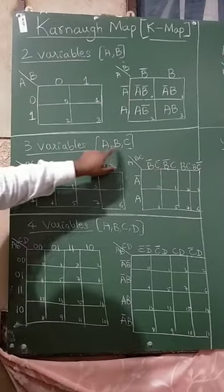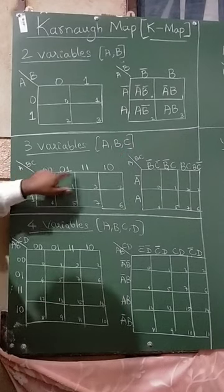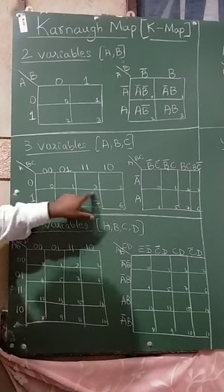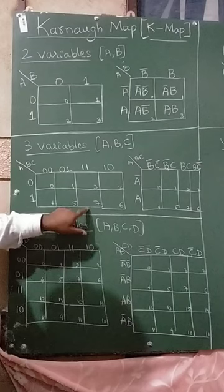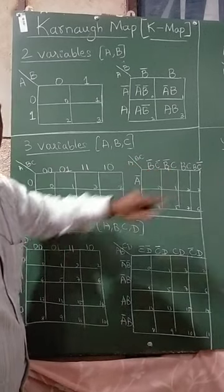In 3 variables: A, B, C. So A, here B, C. 0, 1. Here, 0, 0, 0, 1, 1, 1, 0. In the cells: 0, 1, 2, 3, 4, 5, 6, 7. Here, you should write A bar A, B bar C bar, B bar C, BC, BC bar.